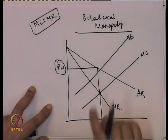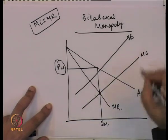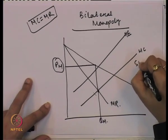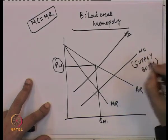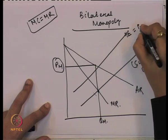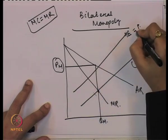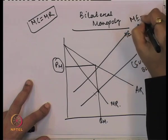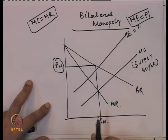But the producer cannot be the price maker as there is a single buyer. So here we introduce the supply curve of the buyer, that is MC. MC is the supply for the buyer. This is the supply curve of the buyer, and marginal expenditure equals P. The buyer will go on purchasing additional quantity to maximize profit until the time marginal expenditure is equal to P.